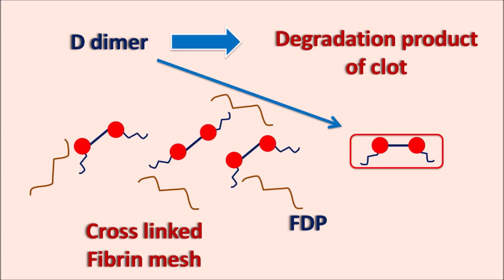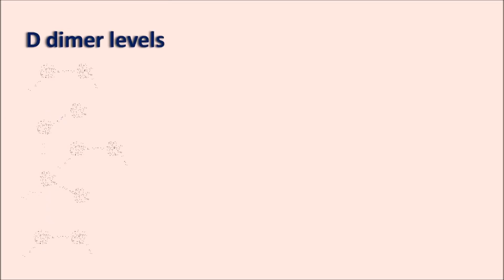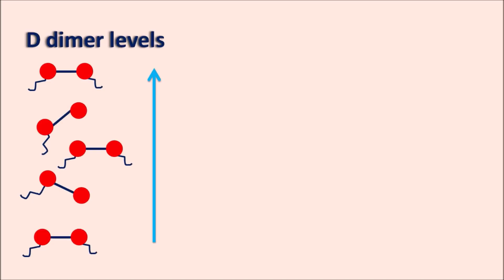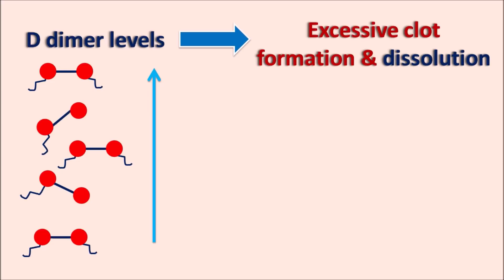D-dimer formed after dissolution of the blood clot is normally cleared, so under normal conditions we cannot find significant D-dimer levels. But under abnormal conditions, we can observe elevated D-dimer levels. These levels are excessively increased in conditions involving excessive clot formation and dissolution. In any pathological condition where there is excessive clot formation followed by dissolution, we can observe elevated D-dimer levels.